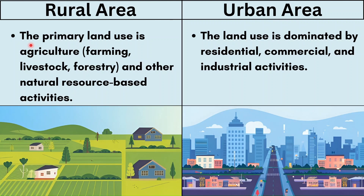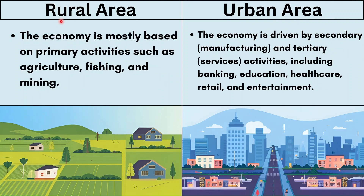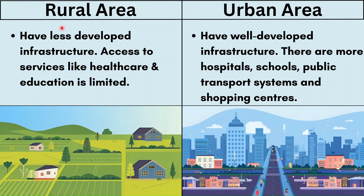Looking at land use, in a rural area the primary land use is agriculture — farming, livestock, forestry and other natural resource-based activities. In an urban area, land use is dominated by residential, commercial and industrial activities. In a rural area the economy is mostly based on primary activities such as agriculture, fishing and mining, while in an urban area the economy is driven by secondary manufacturing and tertiary services including banking, education, healthcare, retail and entertainment.